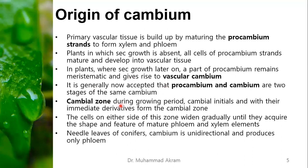During the growing period, cambium initials and their immediate derivatives form the cambium zone. The cells on either side of this zone widen gradually until they acquire the shape and features of mature phloem and xylem elements. In needles of conifers, cambium is unidirectional and produces only phloem but does not produce xylem tissues.